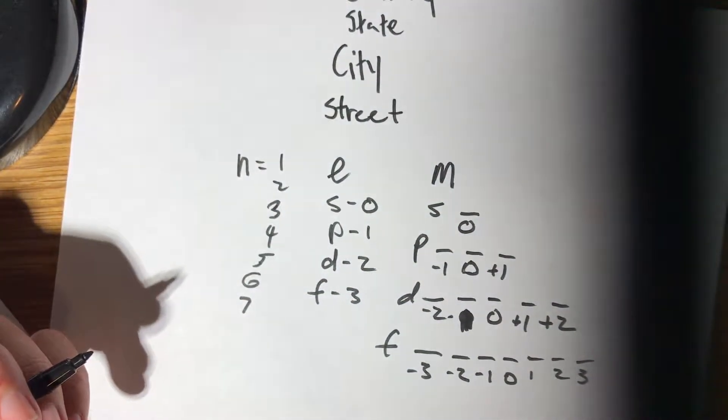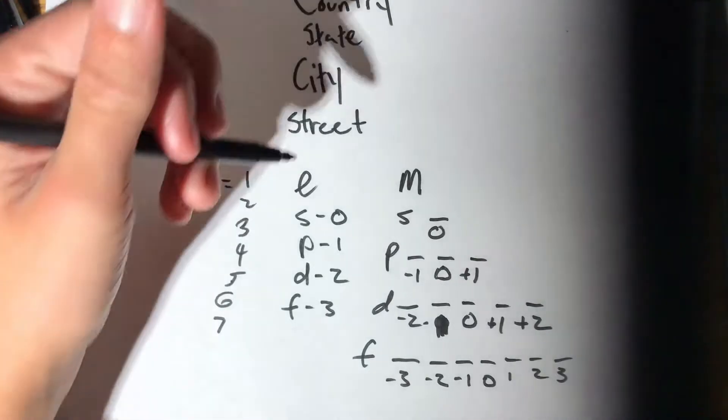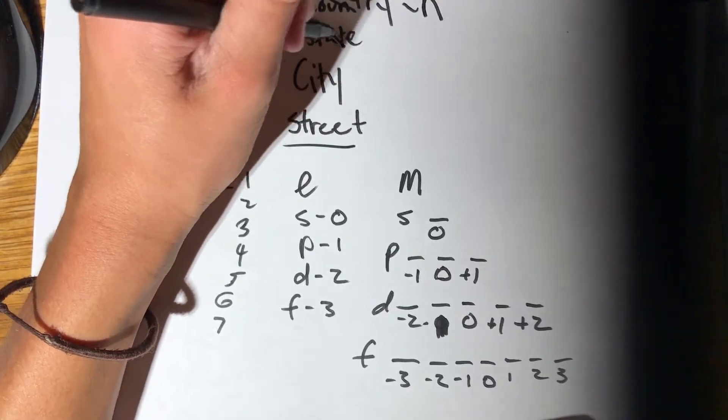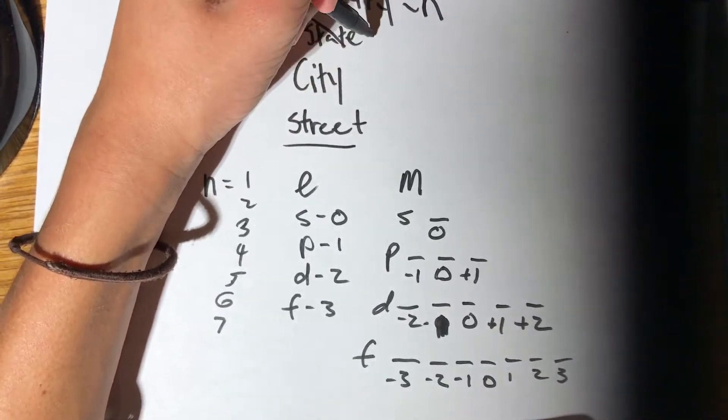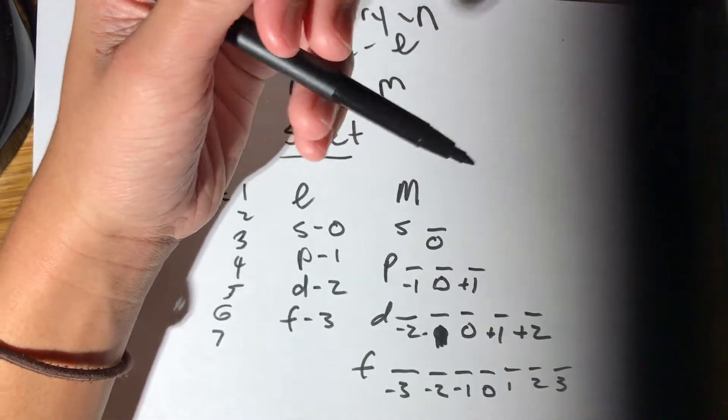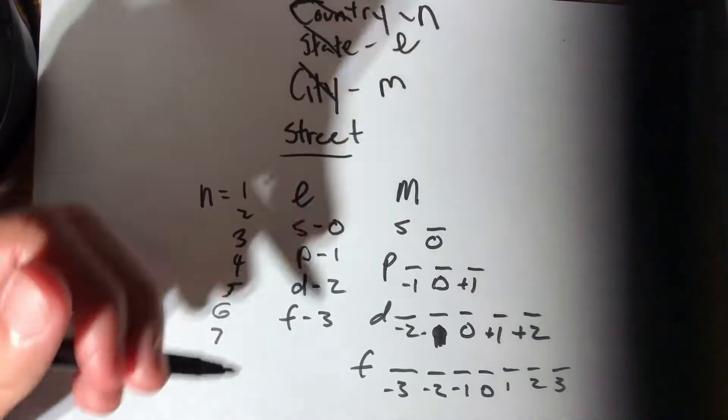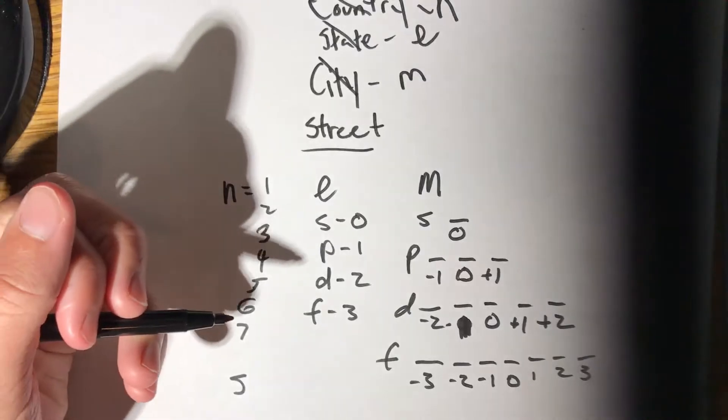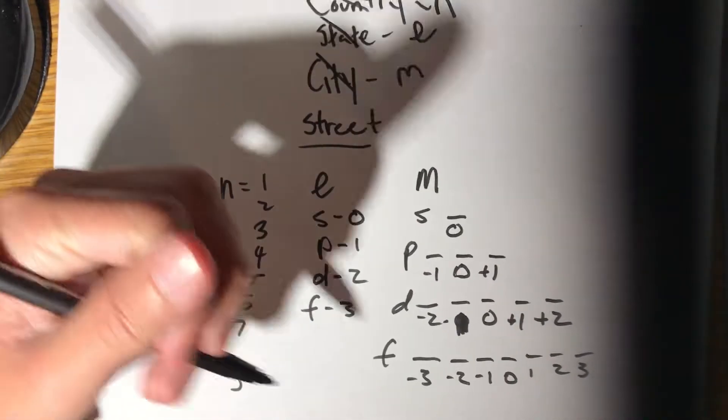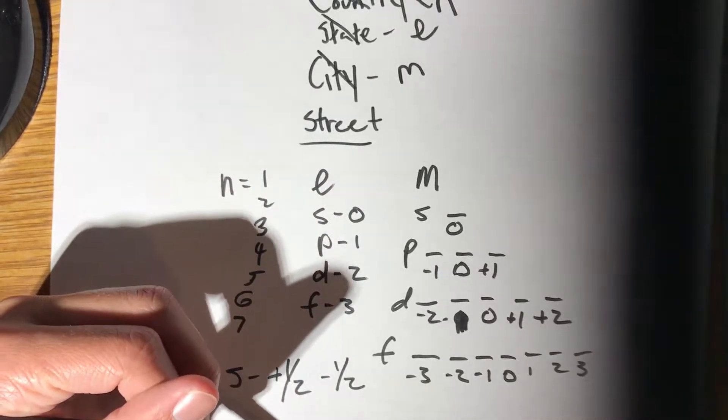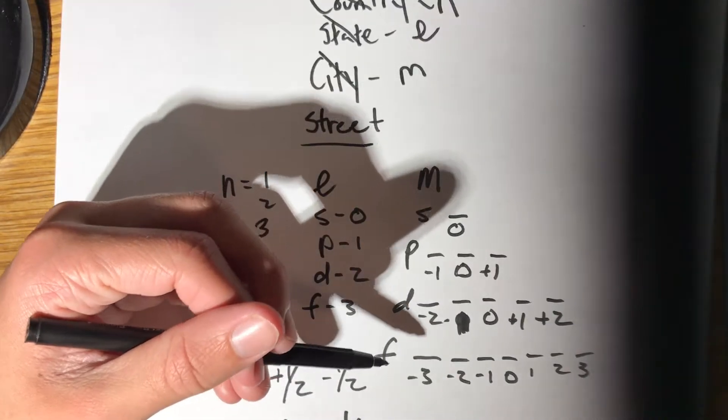Now we're so close to finding that electron. The last thing is our street. We've done country (energy level), state (azimuthal, letter L), city (magnetism, labeled M), and now the street, which is the electron spin in the orbital. It's characterized by the letter S. S for spin is literally just plus one-half or minus one-half, and those are going to look like arrows.